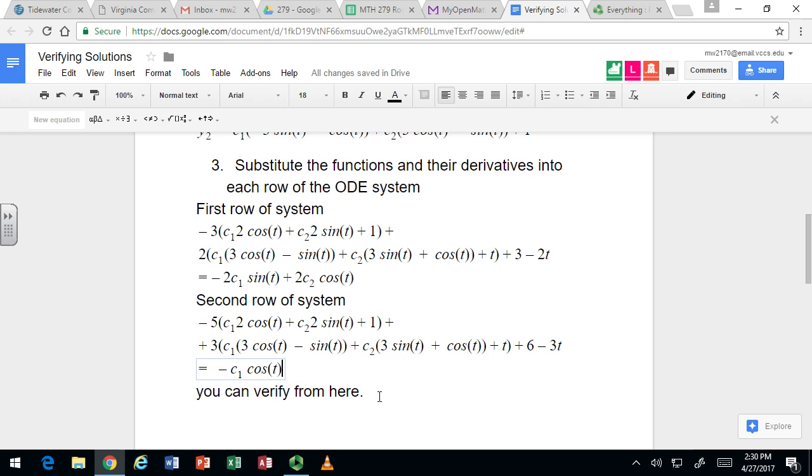Then we've got the c2 sine terms. So there is another negative 10, right, negative 5 times 2, so we've got negative 10 there, and then I've got 3 times 3 again. So that's also giving us negative 10 plus 9, negative c2 sine.